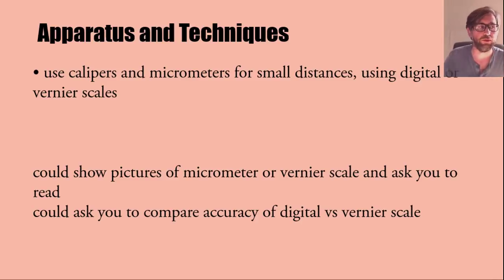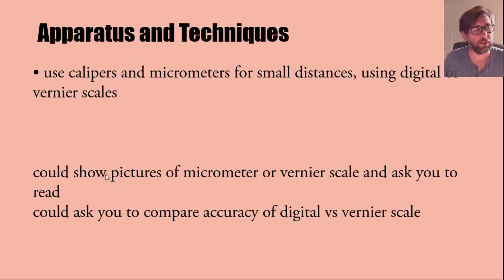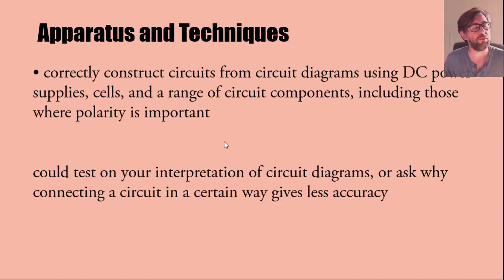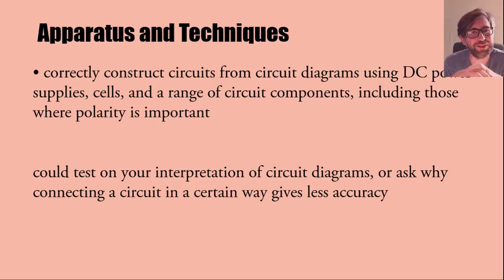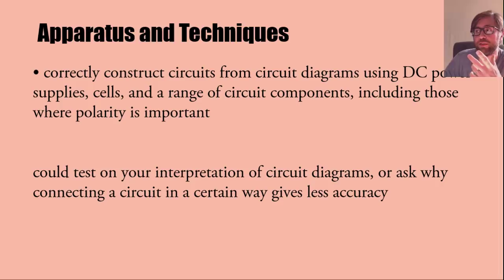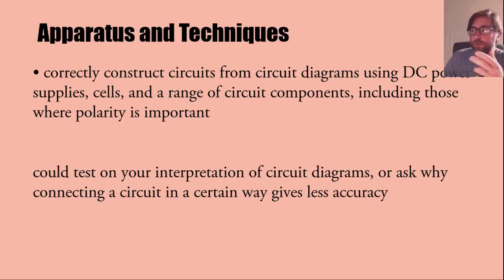Calipers and micrometers are used for small distances using digital or vernier scales — they could show you a picture of a micrometer or vernier scale and ask you to read from it, or ask you to compare the accuracy of digital versus vernier scale. Apparatus and techniques also include correctly constructing circuits from circuit diagrams. DC circuits are basically what you need here, including diodes where polarity is important. They could test you on interpretation of circuit diagrams, ask you to make one, design one, or ask why a particular setup wouldn't give as accurate data as another.